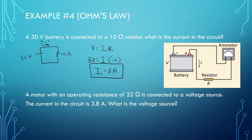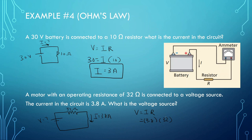Part B: a motor with an operating resistance of 32 ohms is connected to a voltage source. The current in the circuit is 3.8 amps. What is the voltage source? We have this voltage source — we don't know what it is. We know it's connected to a resistor of 32 ohms, and the current flowing through it is 3.8 amps. So V equals IR: I is 3.8, R is 32. Putting this into our calculator — 3.8 times 32 — we get 121.6 volts.